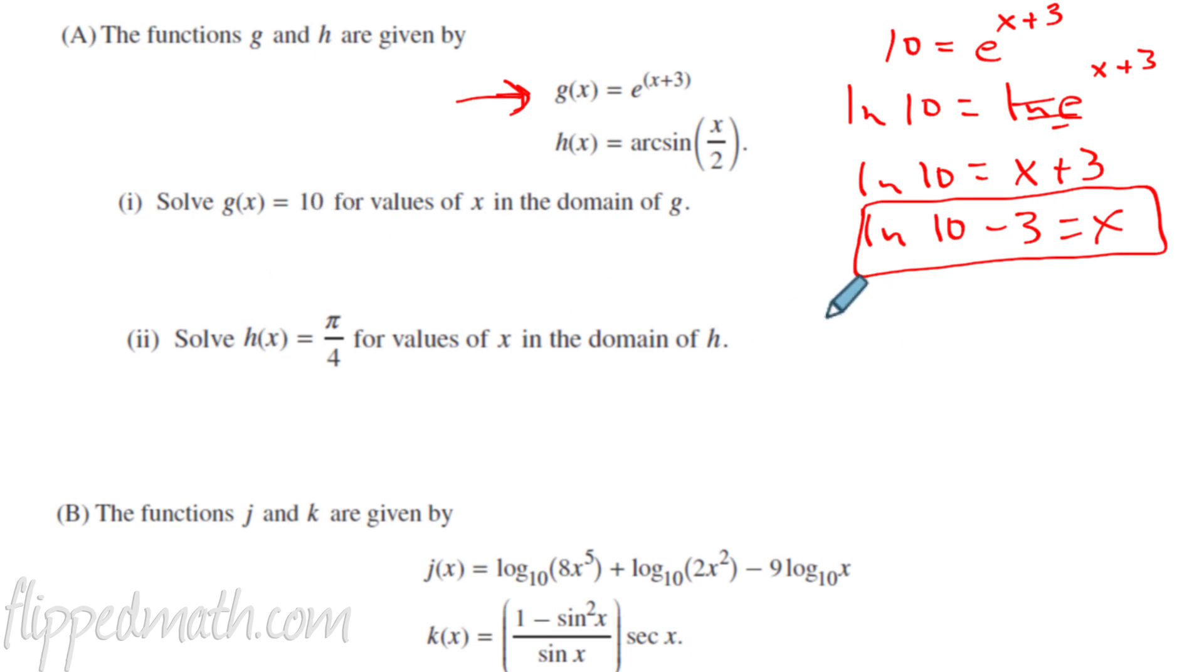So now we're going to go to number 2. Number 2 wants you to solve h of x equals pi over 4. So let's write that out. Pi over 4 equals arc sine. Now remember, arc sine is the same thing as inverse sine. I teach my students it means the angle whose sine is x over 2 in this case. So what I'm going to do to solve this, I'm going to take the sine of both sides.